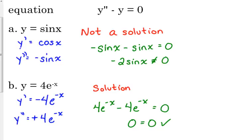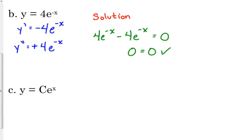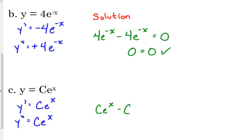You will find when we start solving differential equations, it's very common for exponential functions to be solutions because they are so directly related to their derivatives. Let's look at the general case: y equals Ce to the x, where C is just representing a constant. The derivative is Ce to the x, and the second derivative is also Ce to the x — it just keeps repeating. Obviously this works as well because the second derivative is the exact same thing as the original function.